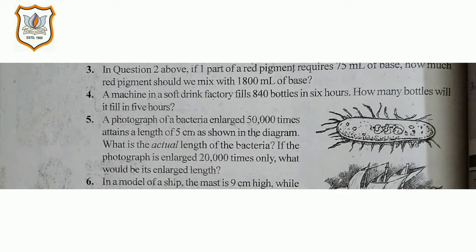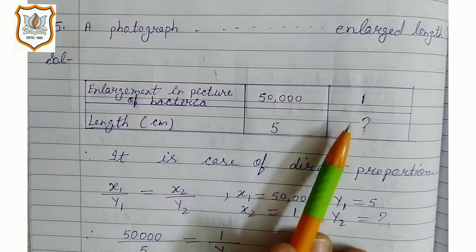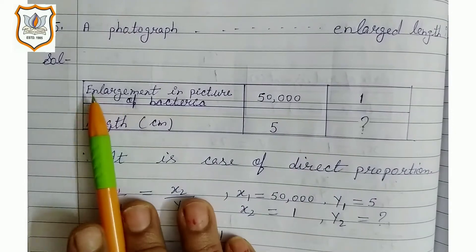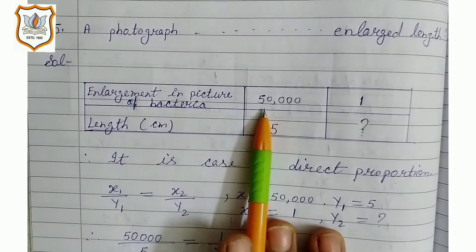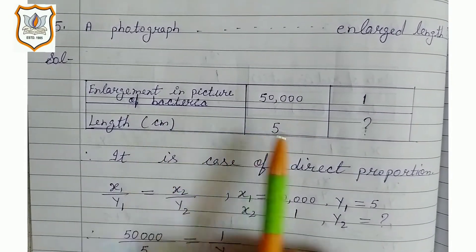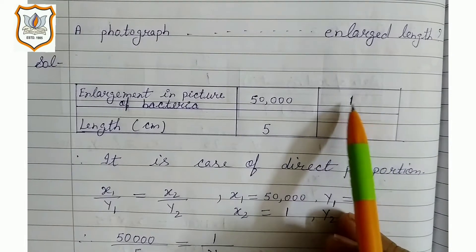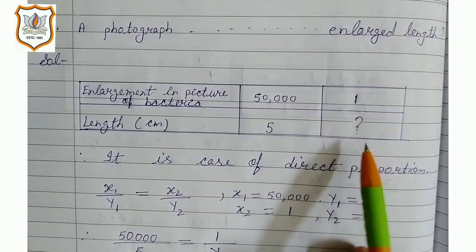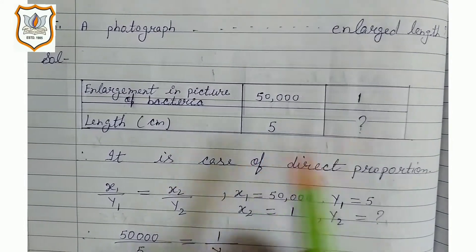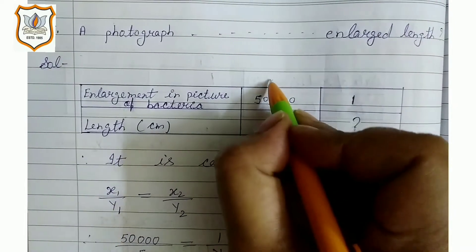Let's solve the fifth sum. Solution of fifth sum: first we will draw the table. Enlargement in picture of bacteria is 50,000 and length in centimeter is 5. Now we will find the actual length in centimeters. So students, this is x1.